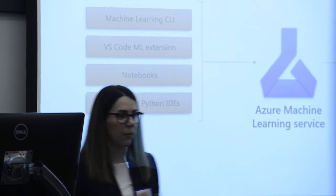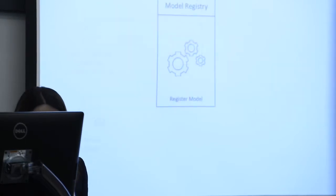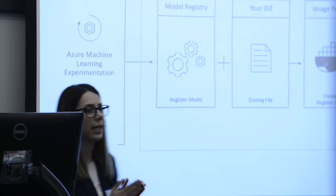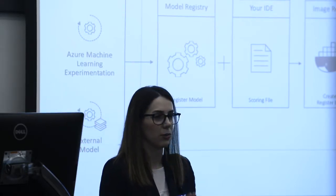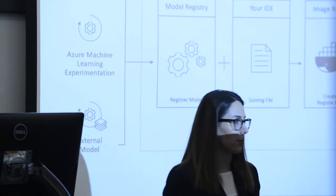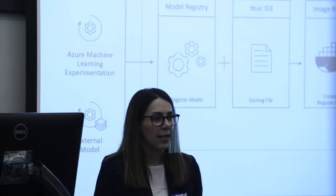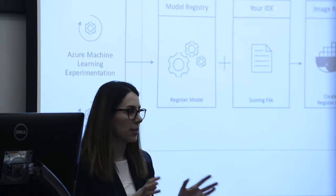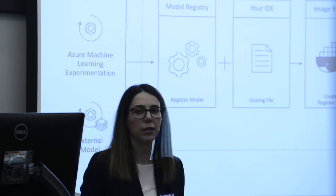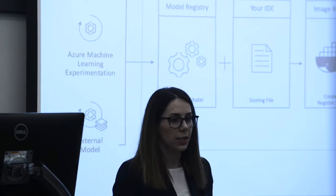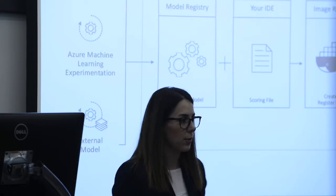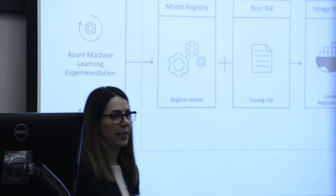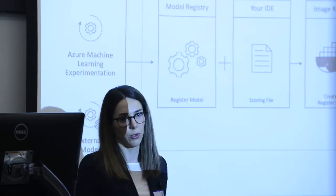Regarding deployment: when you're done training your model and you're happy with its accuracy, you register your model, and then using a scoring script and your model file you create a Docker image, which you can deploy into cloud or at the edge. With Azure Machine Learning Service, we made it even easier — with just a few lines of code you can deploy your models.